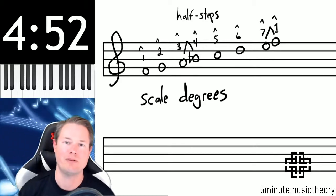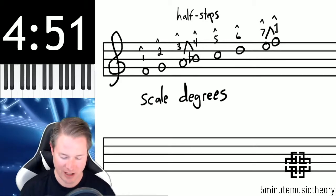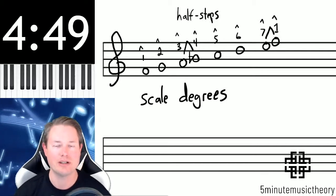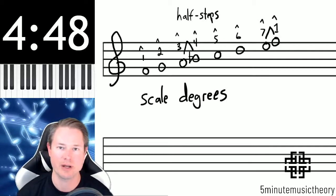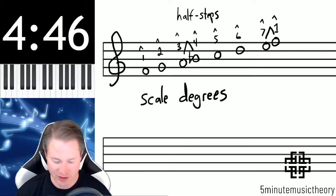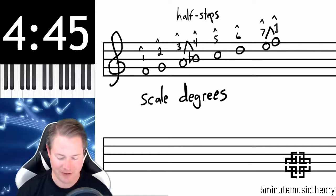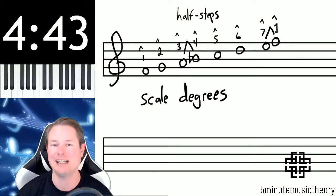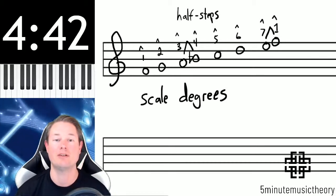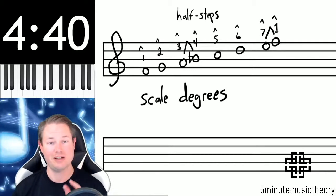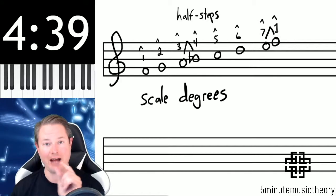First, I have up on the screen here a major scale — the one that we've been using to refer to the major scale up to this point — the F major scale: F, G, A, B-flat, C, D, E, F. And the way I've written it on the screen, you can see the two groups of half steps.